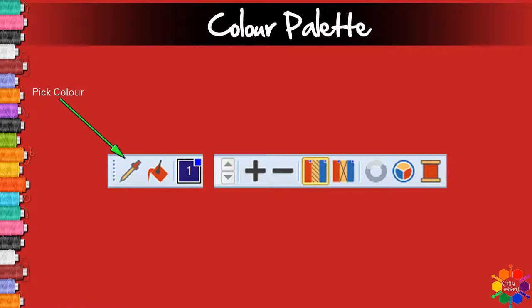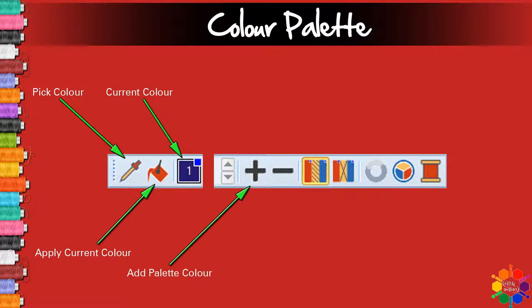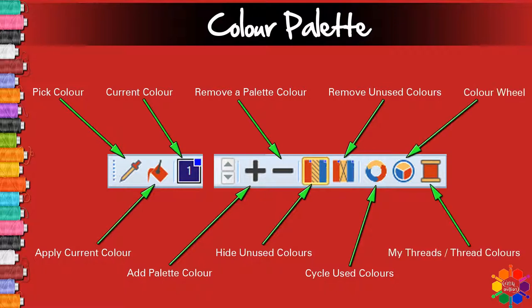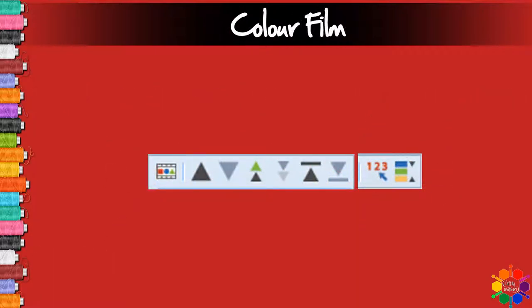Color palette: Pick color, Apply current color, Current color, Add palette color, Remove palette color, Hide unused colors, Remove unused colors, Cycle used colors, Color wheel, My threads or my colors, Color film.